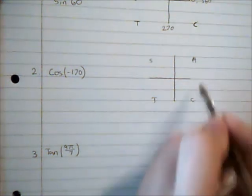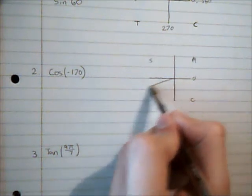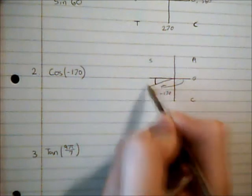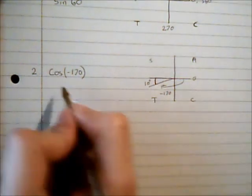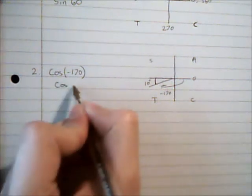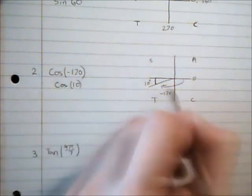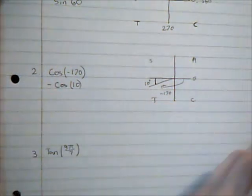So cosine negative 170. So starting at 0, negative 170 is going to be over here somewhere. Which leaves this acute angle of 10 degrees. So cosine negative 170 is equal to cosine of 10 degrees. But in this quadrant cosine is negative. So it's negative cos 10.